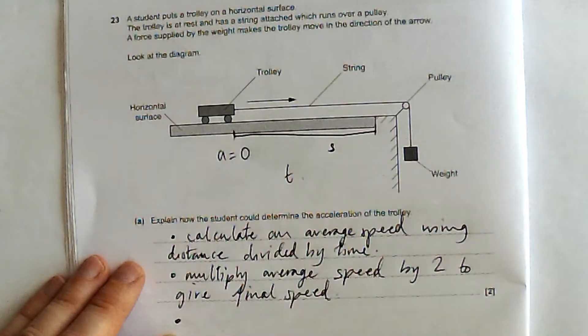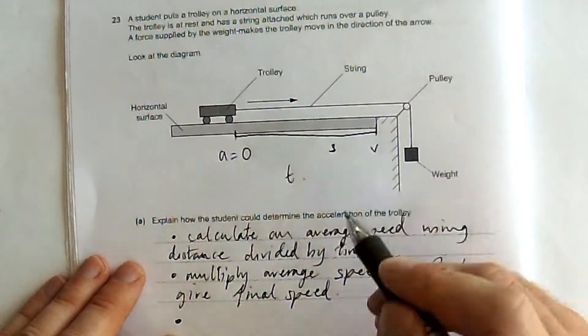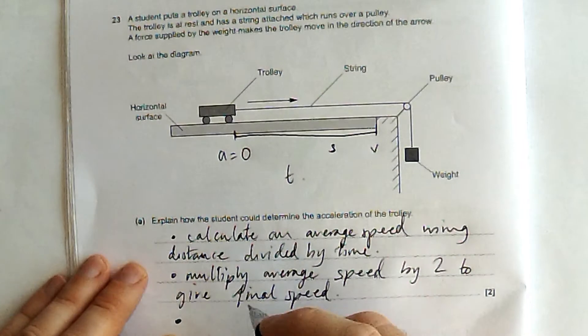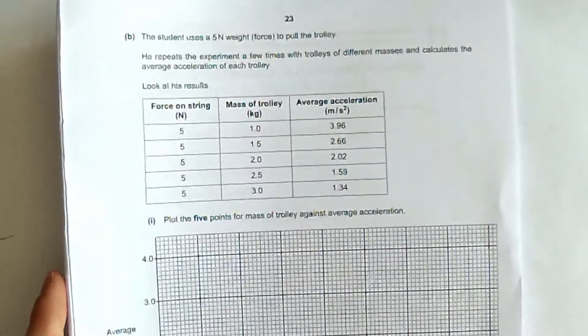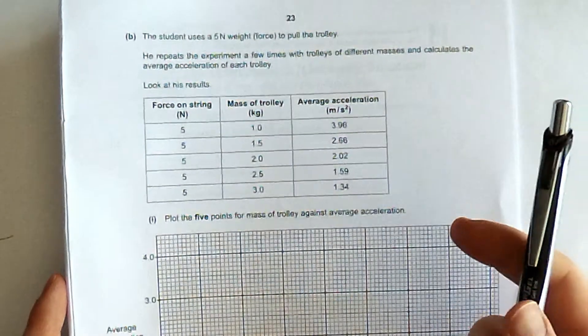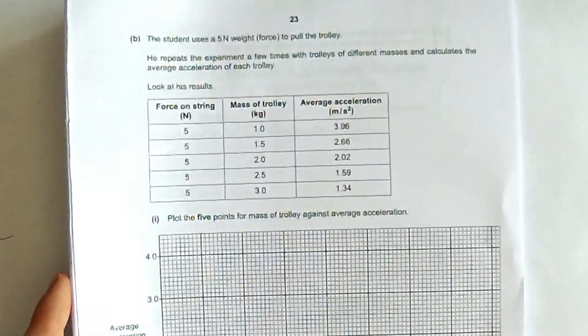And then I would divide the final speed, which would be this V here, by time to give me the acceleration. That's that one. There's one, there's a video here with dragsters about acceleration if you want to check that out.